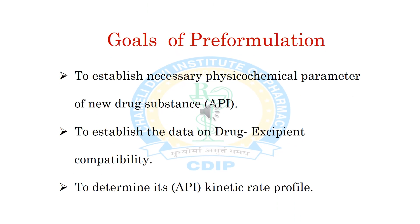So basically, what are the goals of pre-formulation? First, to establish necessary physicochemical parameters of the new drug substance or active pharmaceutical ingredient. Second, to establish data on drug-excipient compatibility. And third, to determine its kinetic profile.